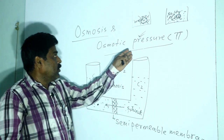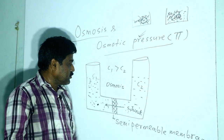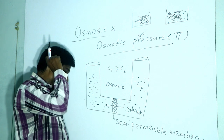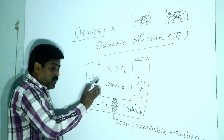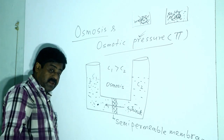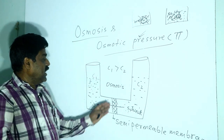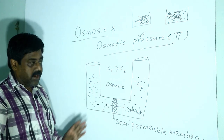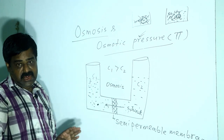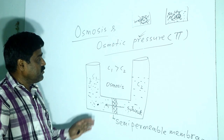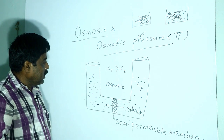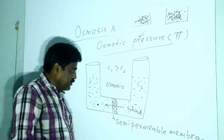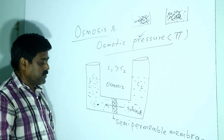So this is osmosis and reverse osmosis. To experimentally measure osmotic pressure, the Berkeley-Hartley method is used.